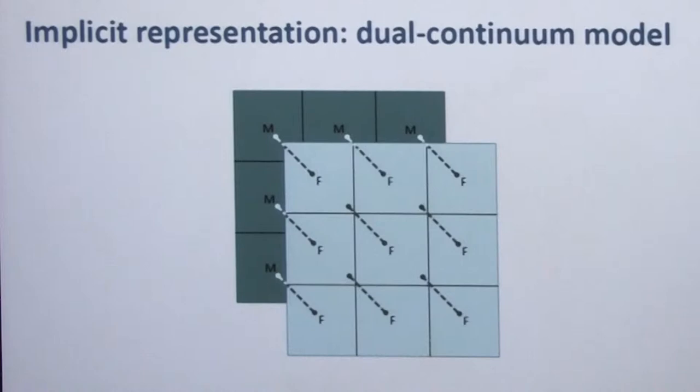We have a matrix continuum, a fracture continuum, and we let them talk to each other by a mass transfer term. In terms of the fracture continuum, instead of solving for individual fracture pressures, for example, we solve for an average fracture pressure across the network, so we can reduce our computational cost.